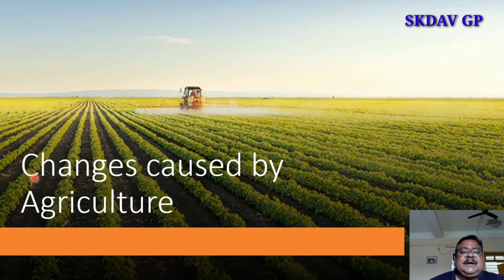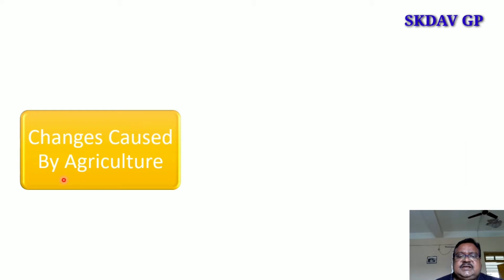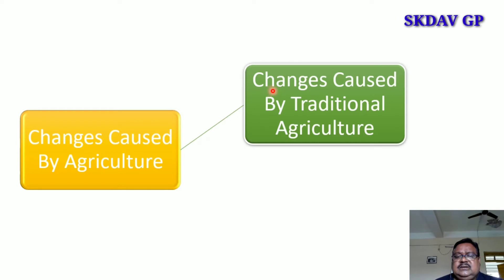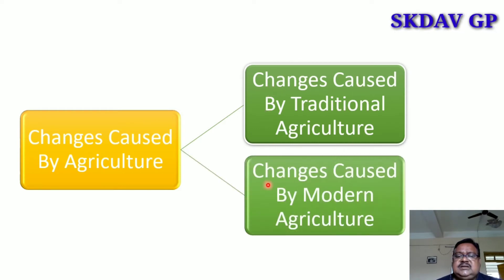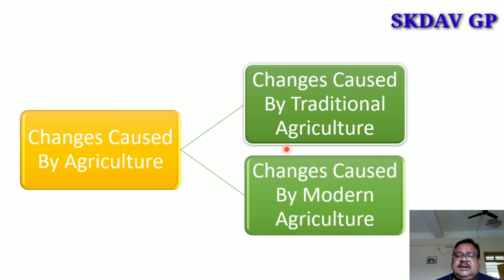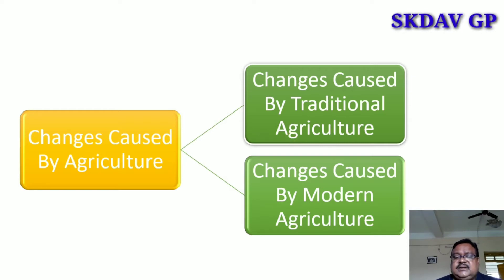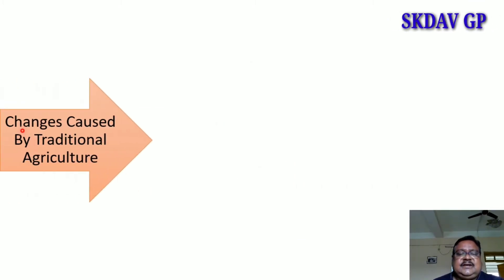The next part is changes caused by agriculture. There are two types: changes caused by traditional agriculture, and changes caused by modern agriculture. We will go through each one by one.